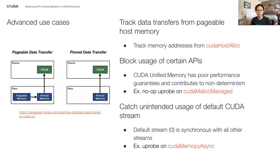Another feature of CUDA is the unified memory system, which enables greater memory flexibility in CUDA applications. With this flexibility, however, comes a trade-off which results in poorer performance guarantees. And while there are solutions where unified memory is advantageous to use, we don't want to use this in the vehicle due to real-time performance constraints. To guarantee this, we can attach a simple no-op U-probe onto the CUDA malloc managed API to catch any usage of the system at runtime.